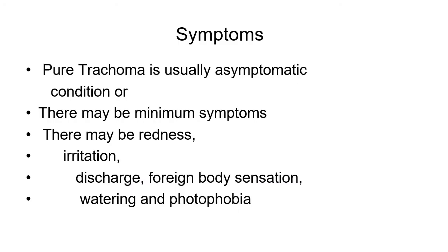Pure trachoma is usually an asymptomatic condition, or there may be minimal symptoms such as redness, irritation, discharge, foreign body sensation, and watering. These occur because chlamydia is an epitheliotropic organism causing problems with the conjunctiva and cornea through epithelial infection and inflammation.